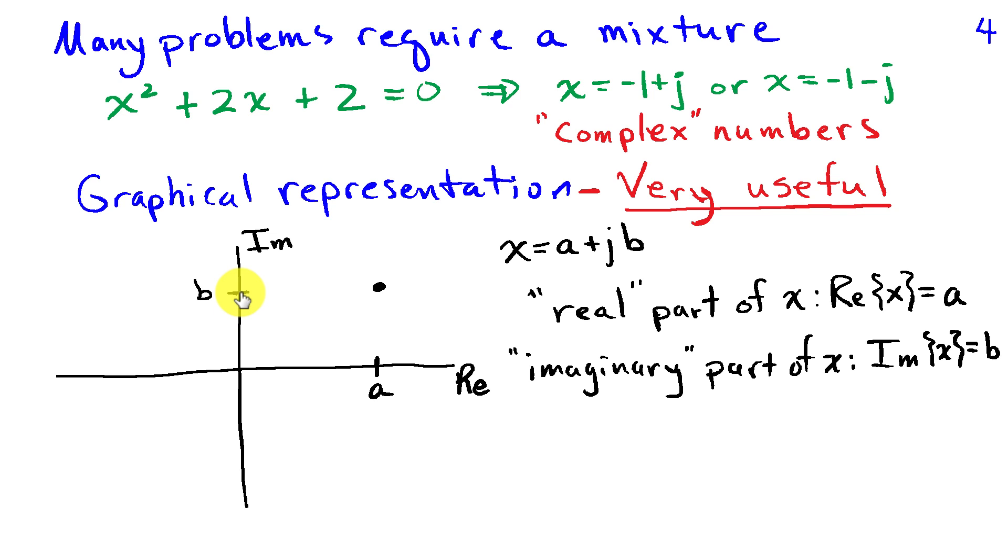When we only were looking at real numbers, we had the number line, and we could put numbers along a line. Well, with this new type of number, imaginary number, these complex numbers that we need to solve certain problems, we can graph them not on a line, but in a plane. If z is -1.5 + 0.5j, that is going to show up with the horizontal coordinate, the real part, being -1.5, and the imaginary component being 0.5. That's this point in the complex plane.